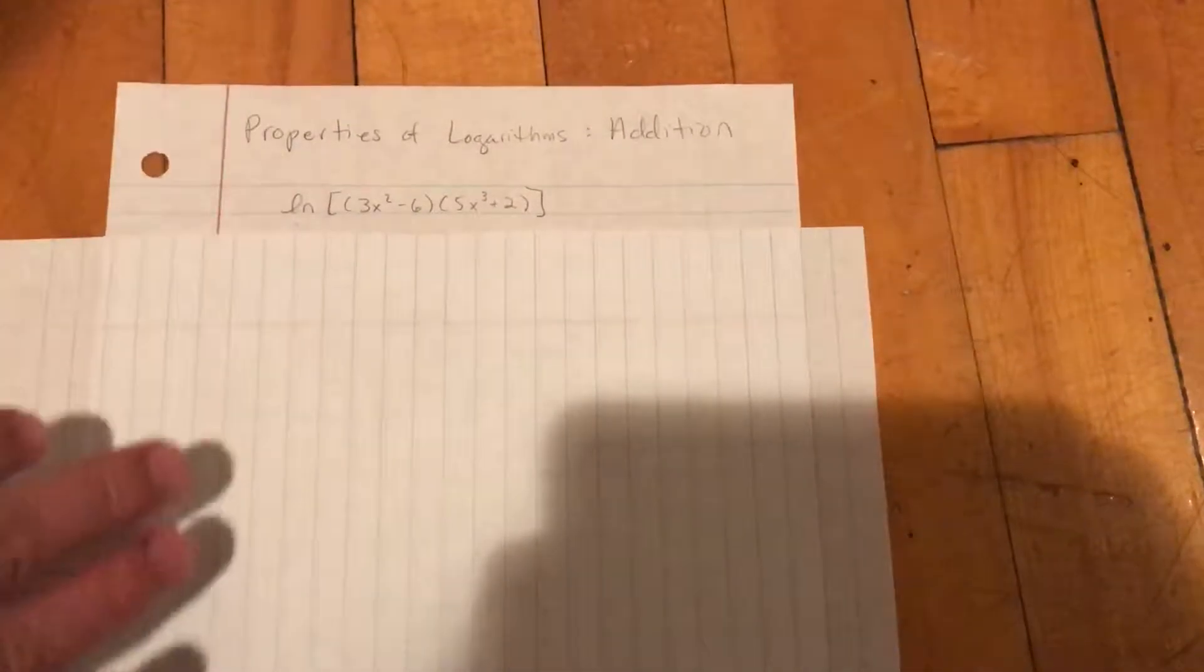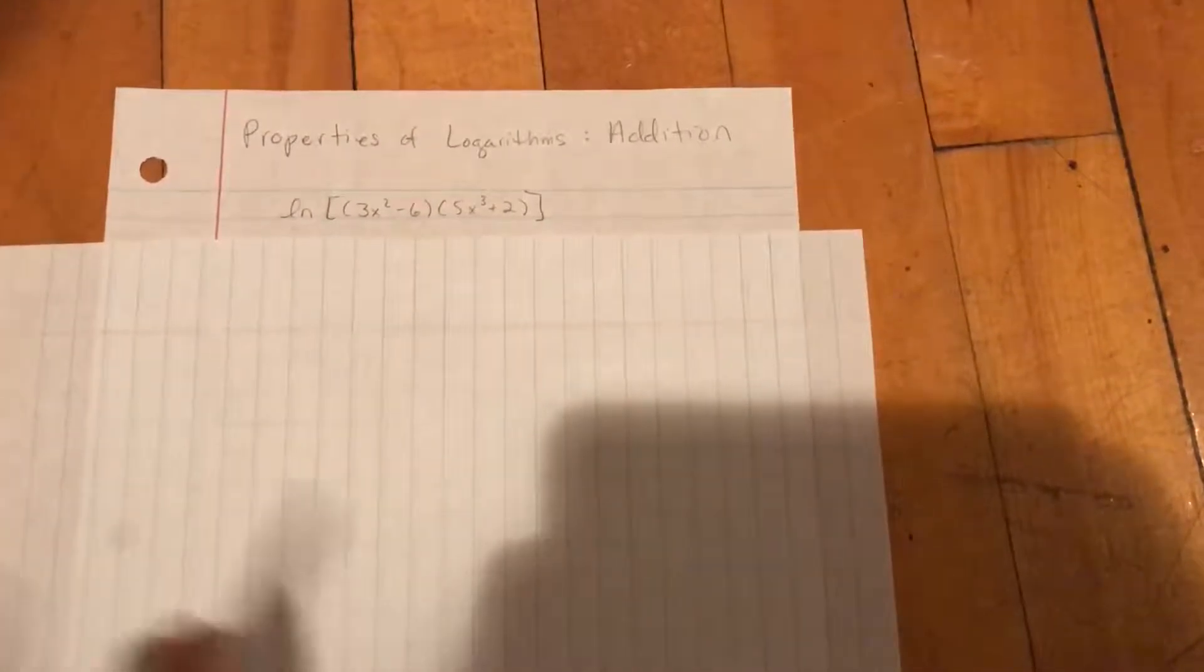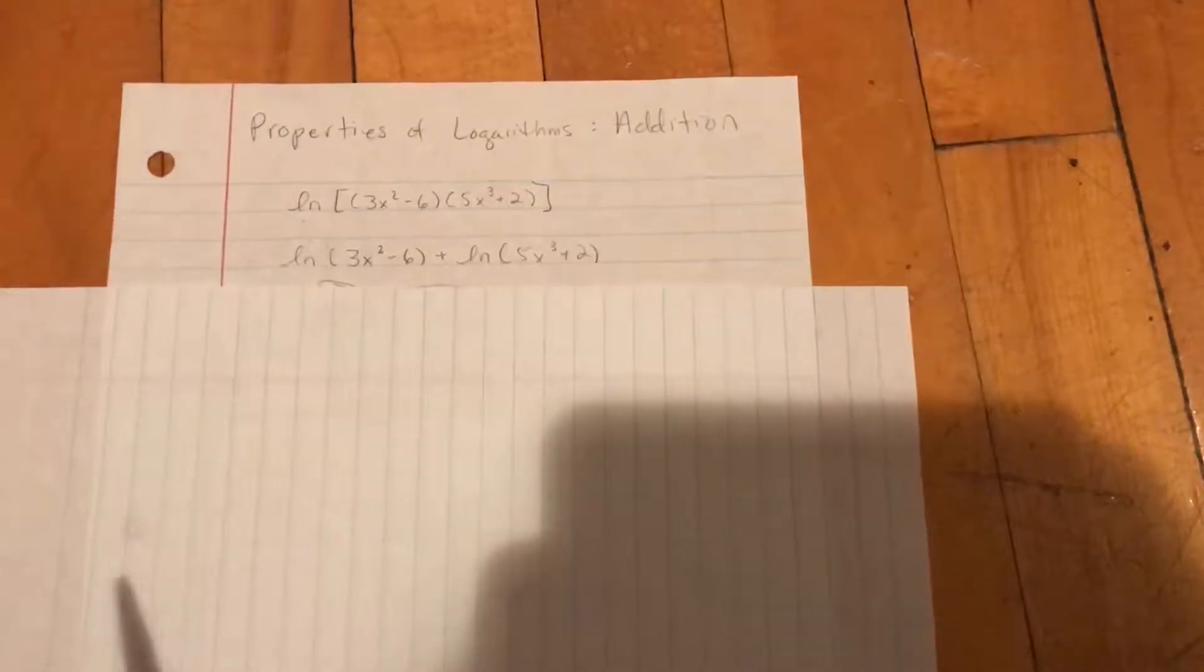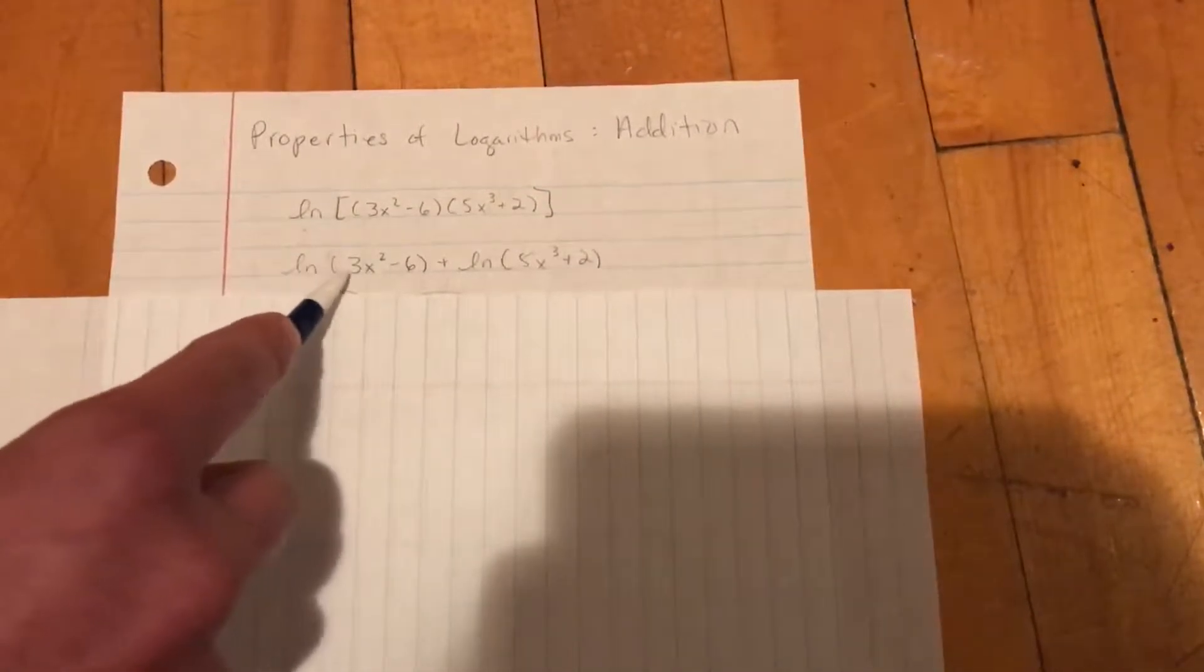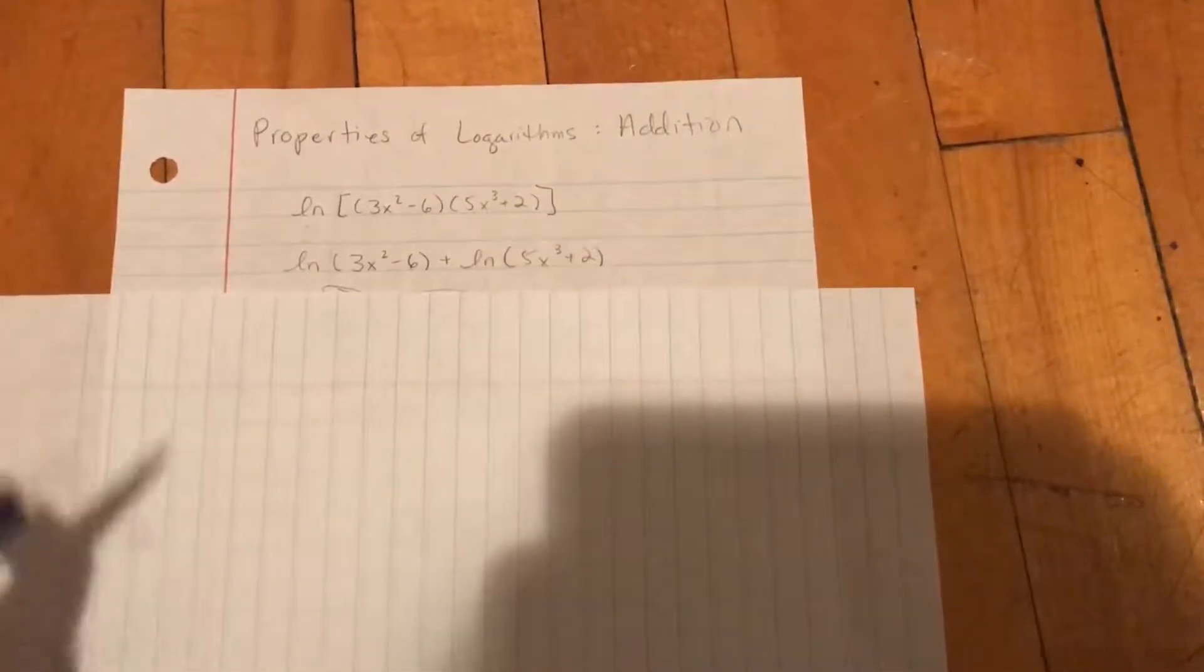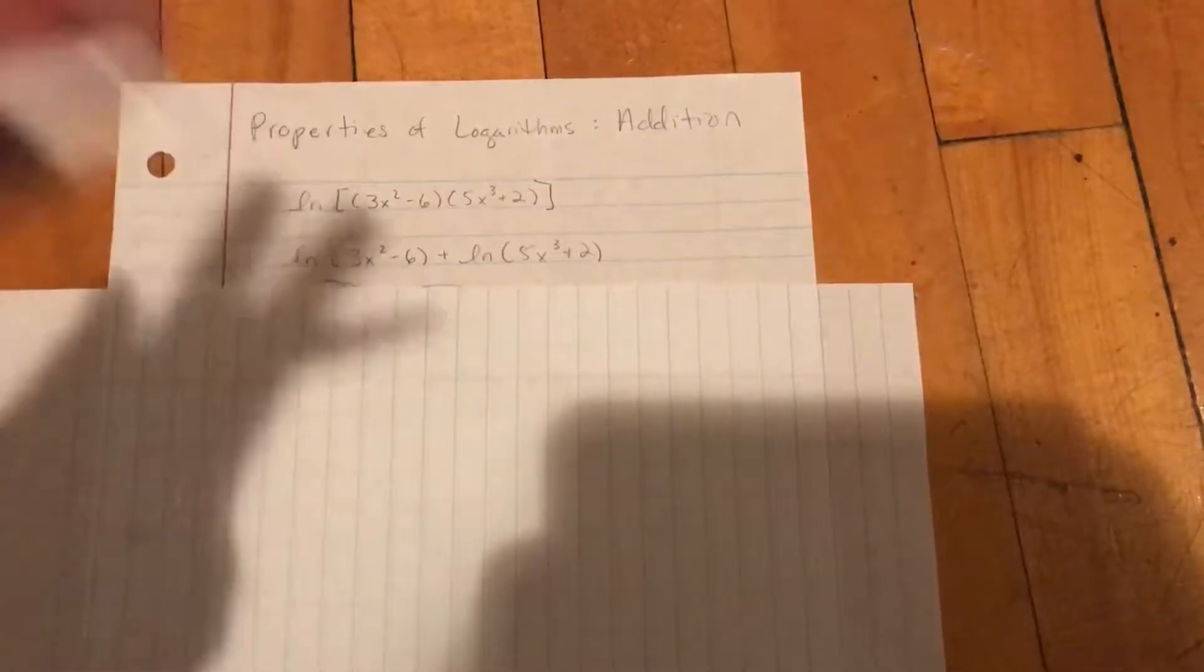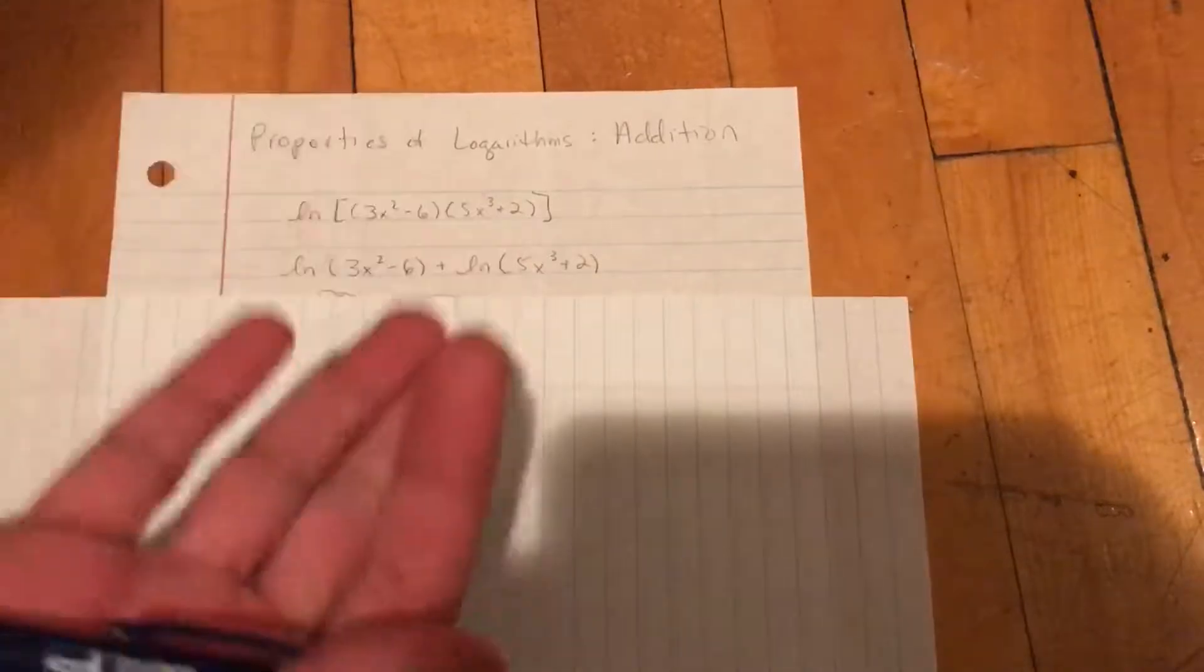So an easy way of doing this instead of taking product rule and making it get really ugly really fast, you can go ahead and split it up into two separate logarithms. And you've got ln of 3x squared minus 6 plus ln of 5x cubed plus 2. The property of logarithms addition states that if you have two different things being multiplied together, you can go ahead and split them up into separate logarithms.